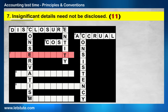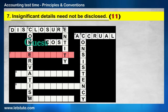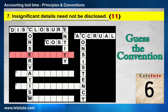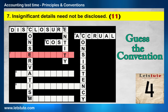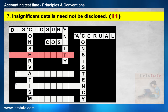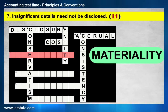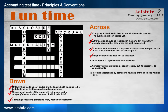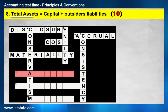The seventh one is across: Insignificant details need not be disclosed — which accounting convention justifies this? Yes — the materiality convention.